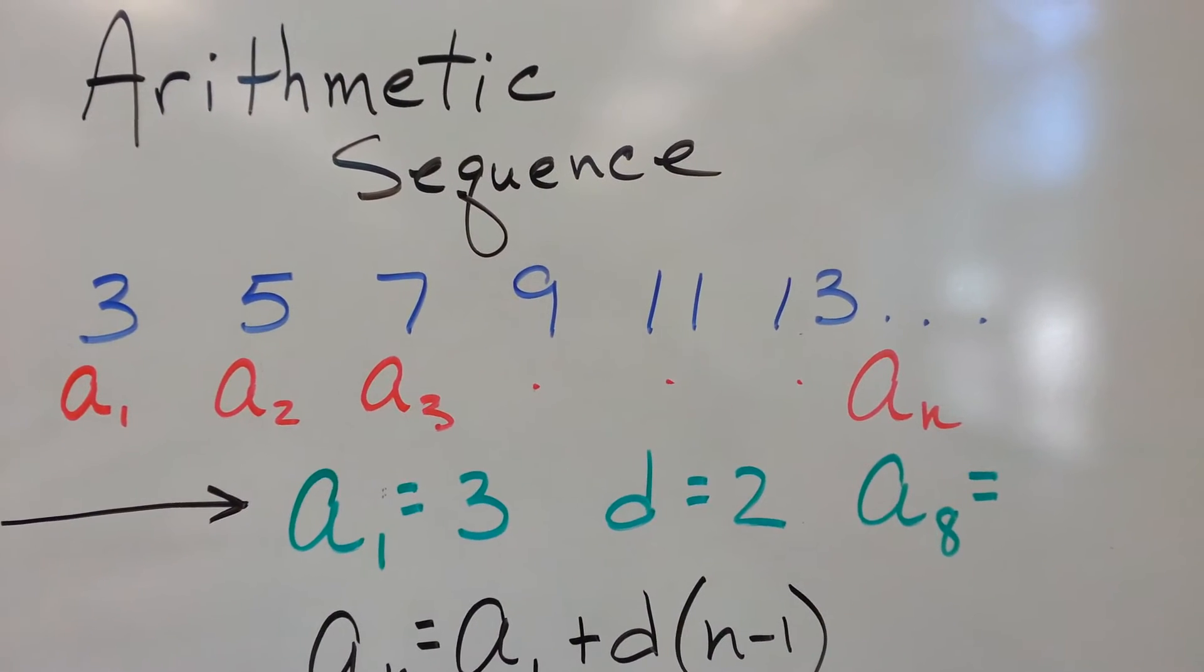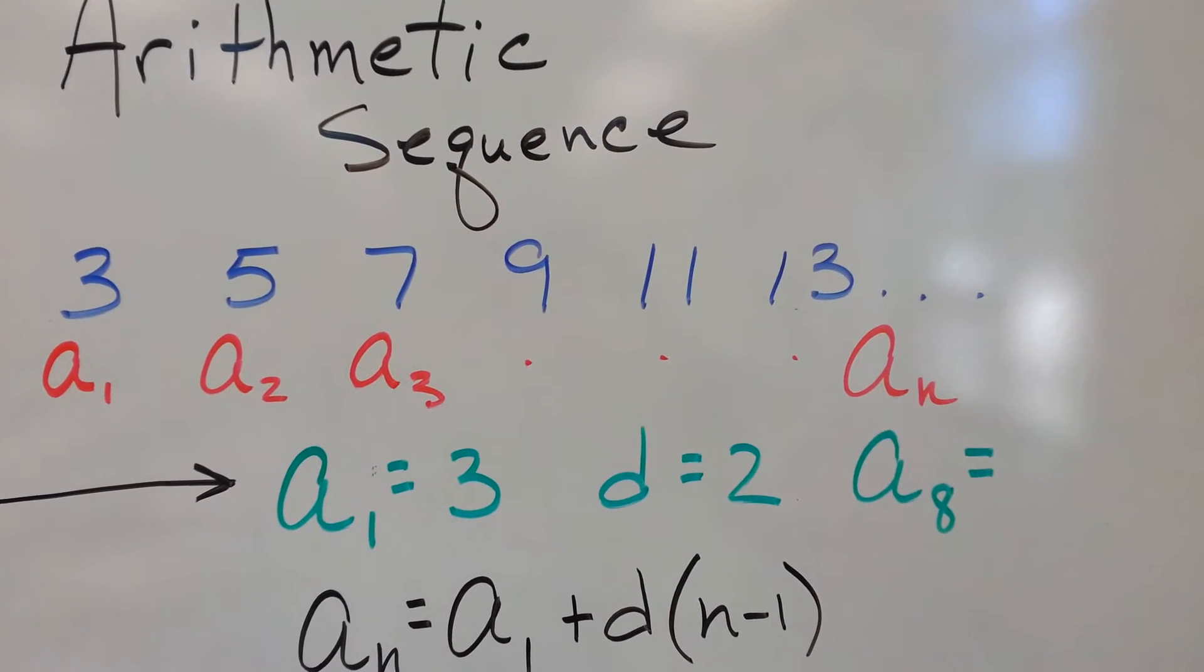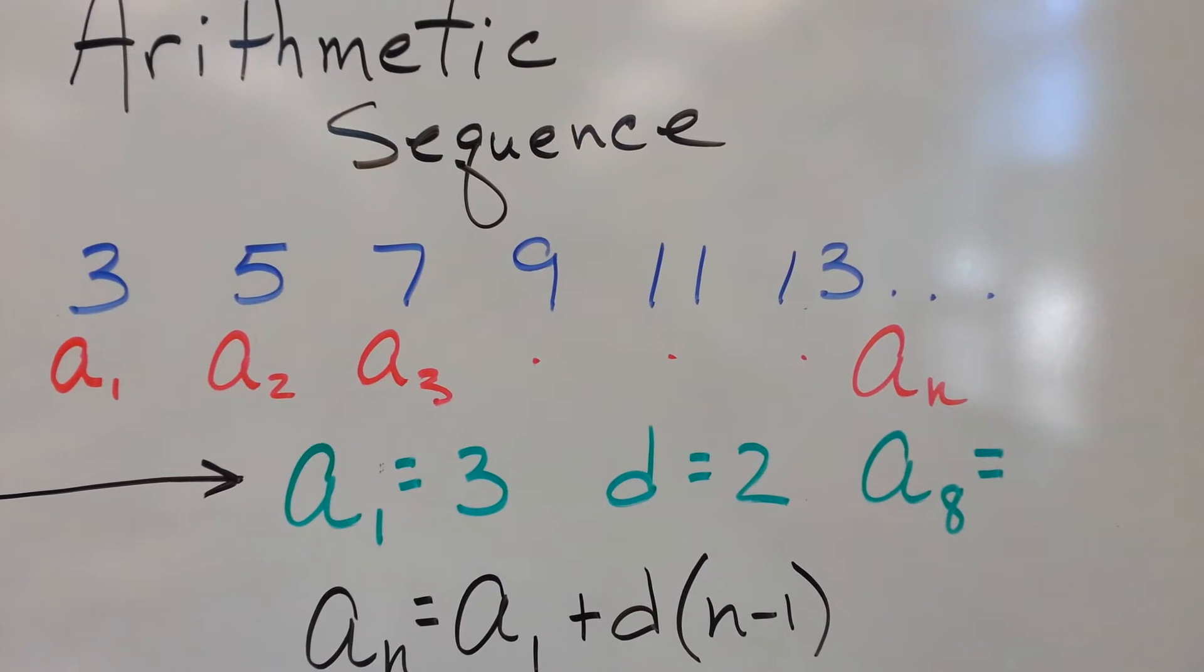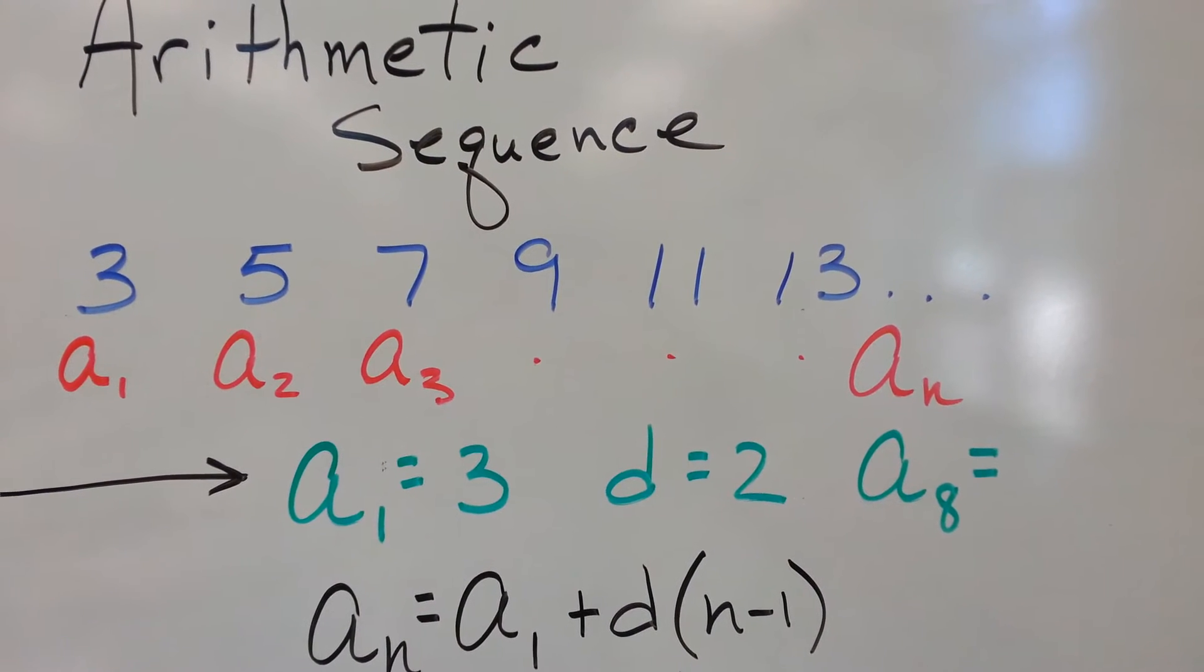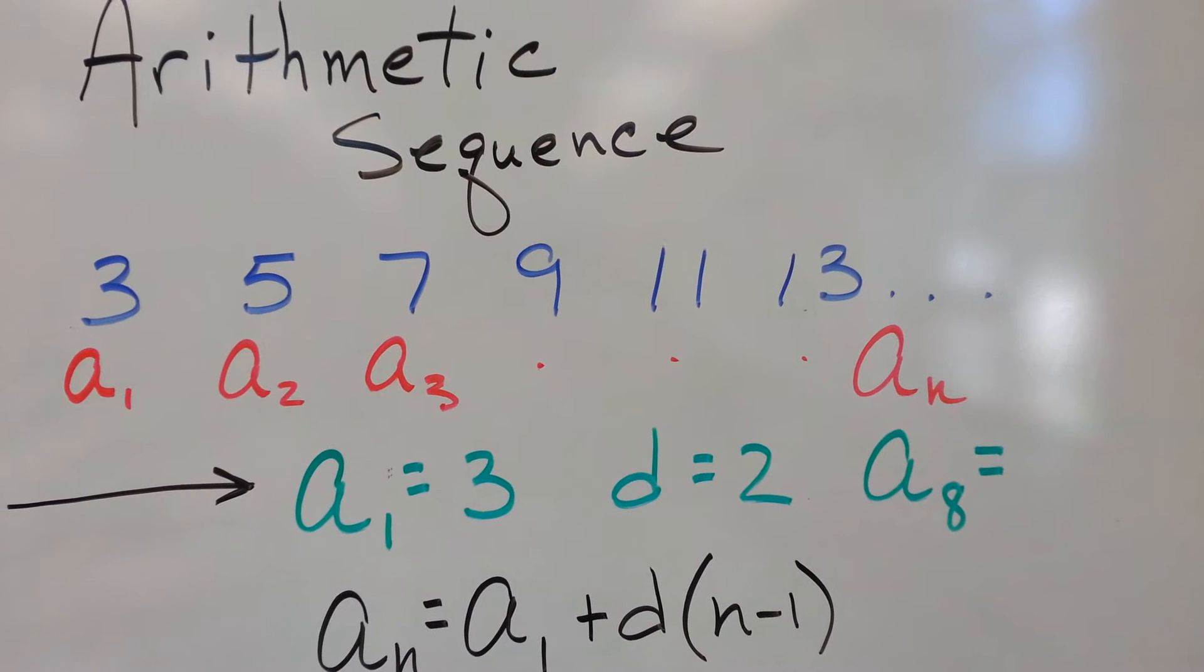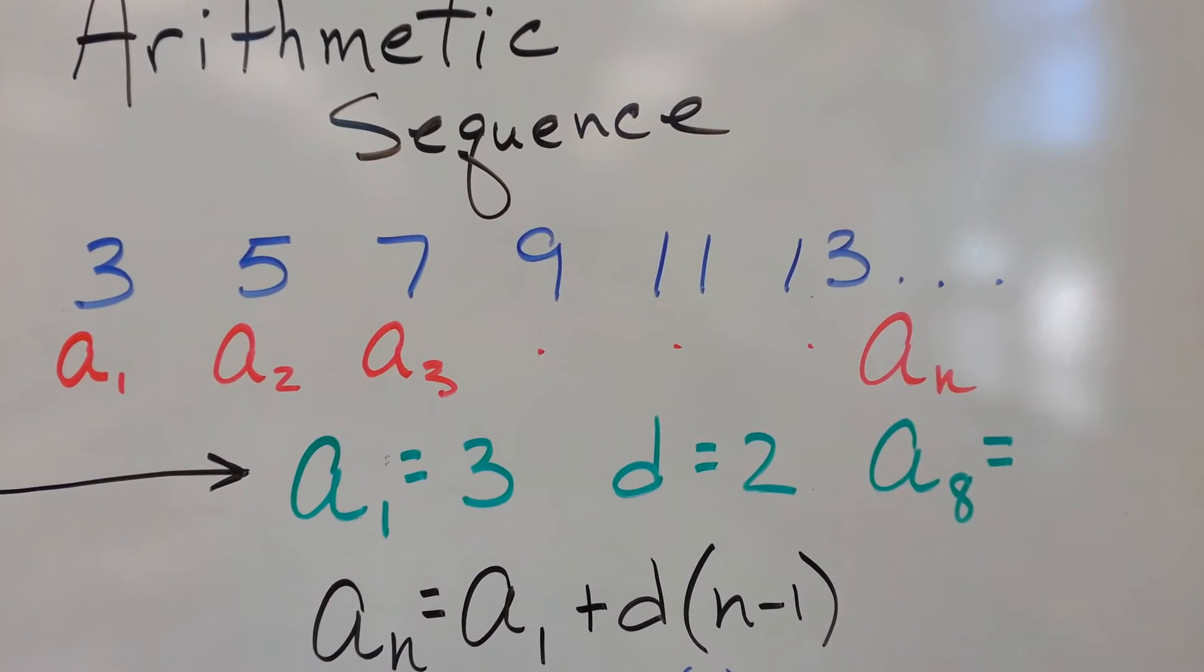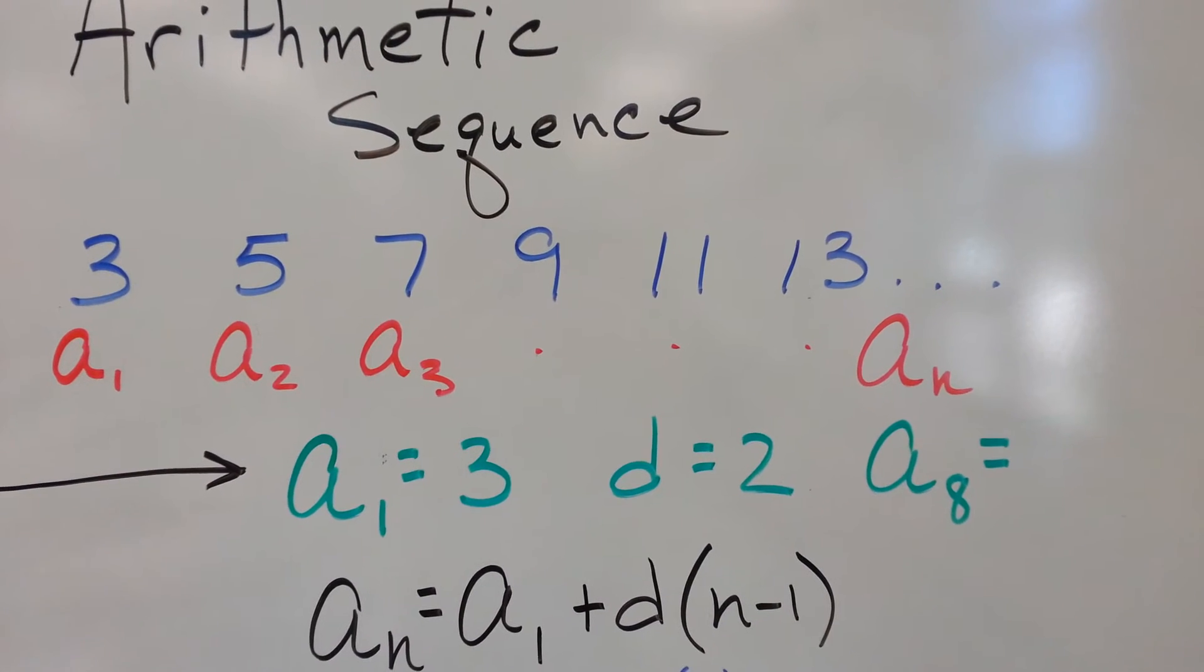We go all the way out. And if you want some term way down the line, you can just generically say that's the nth term. It may be that I want to put 100 in there for n or 50 or whatever. But somewhere down the road, that red A sub n is the nth term in my sequence.